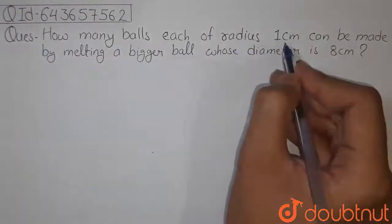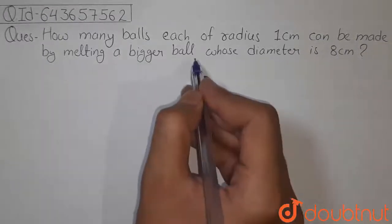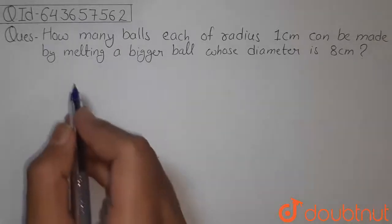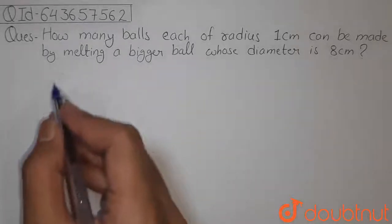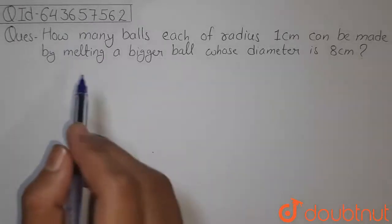So in this question, it is given that there is a big ball whose diameter is 8 centimeters. Now we have to melt that bigger ball and make small balls of radius 1 centimeter.